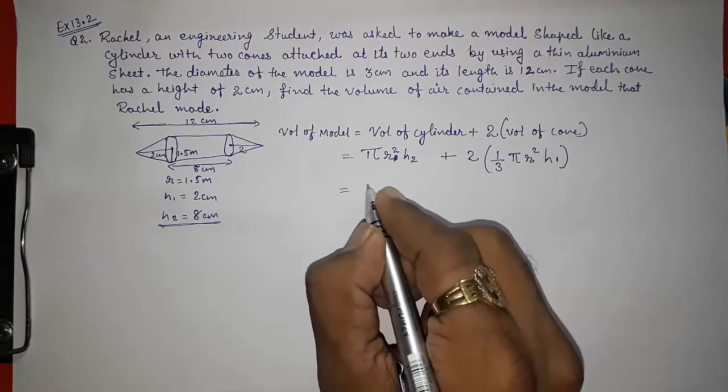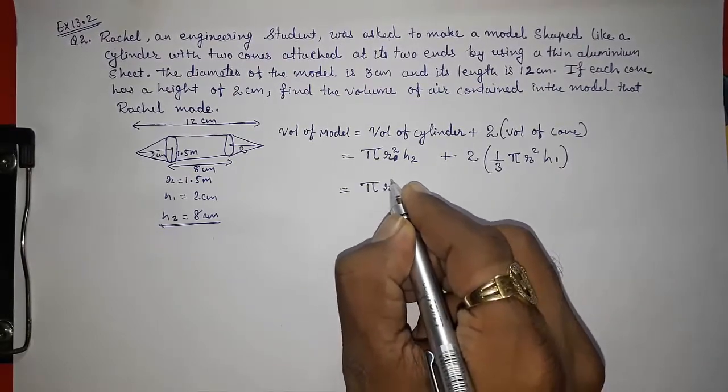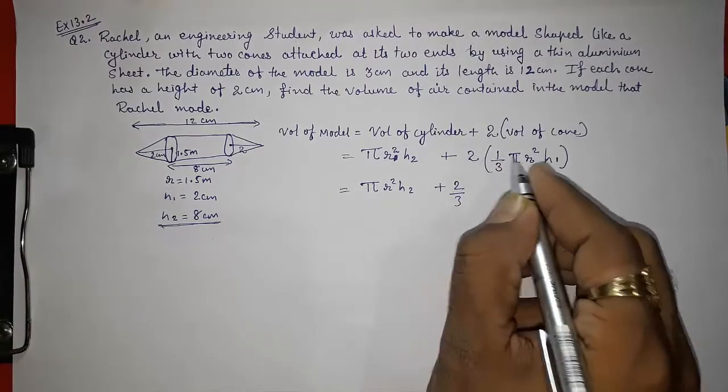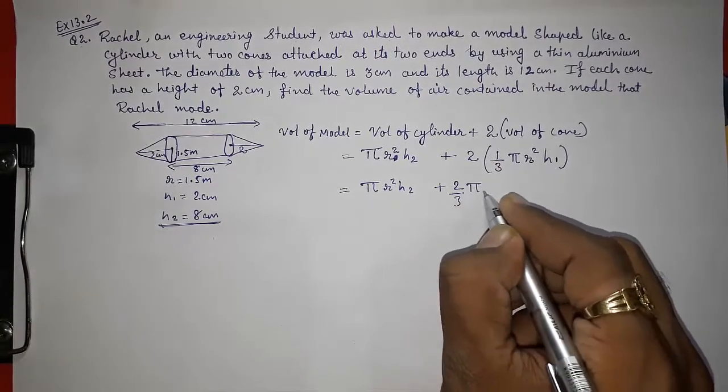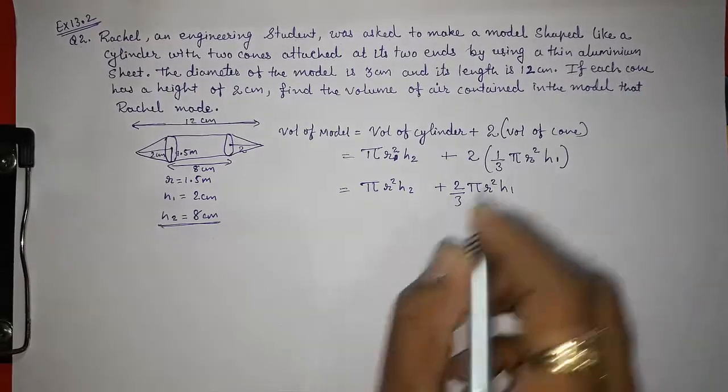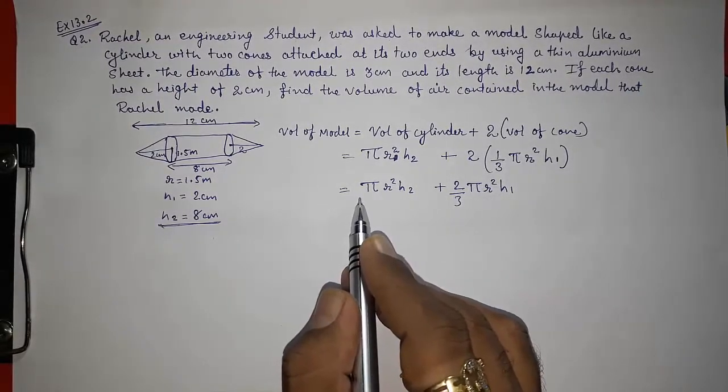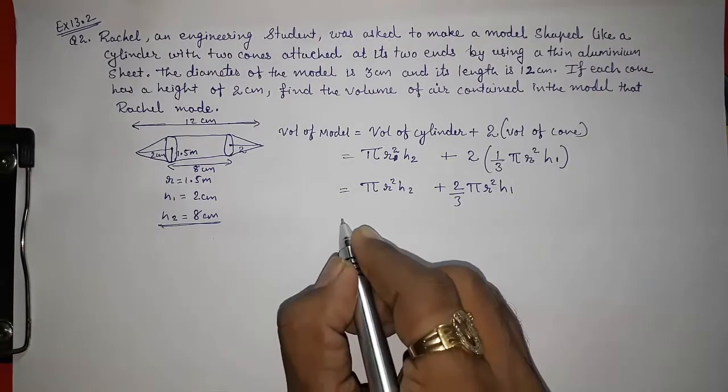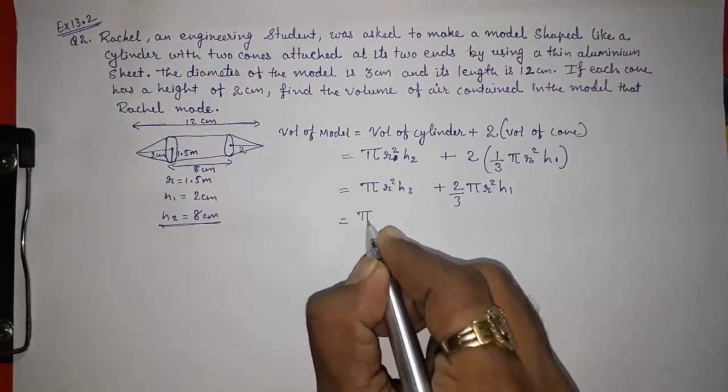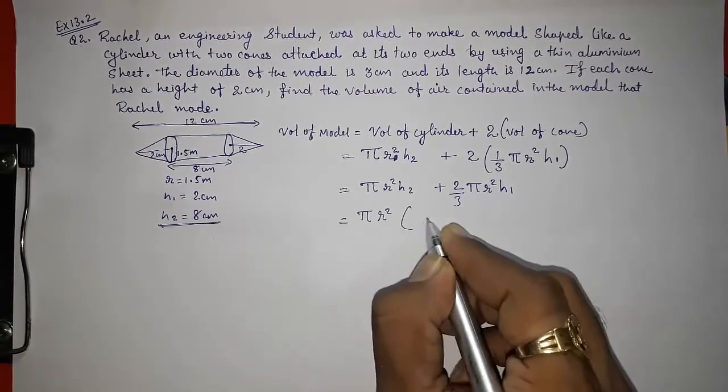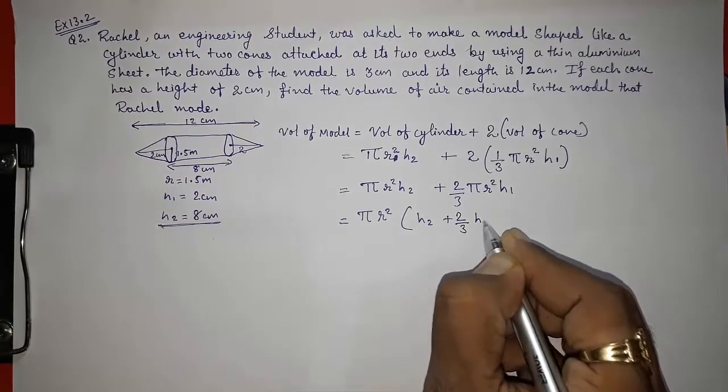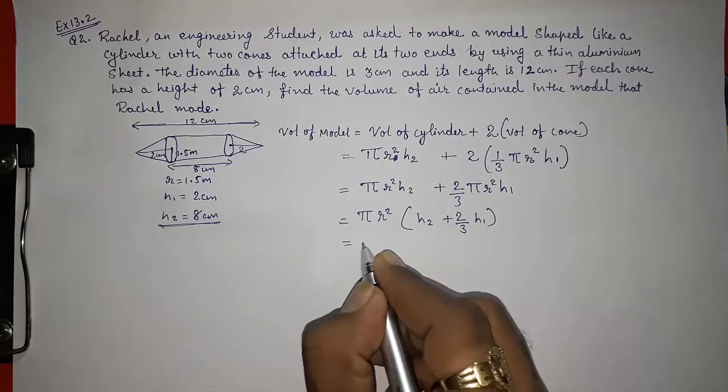Now open the bracket. π r² h2 plus 2/3 multiplied with this π r² h1. Now we can take out π and r² common. π r² common. So we get h2 plus 2/3 h1. Now we are going to put the values.